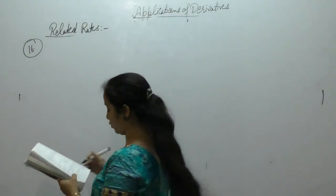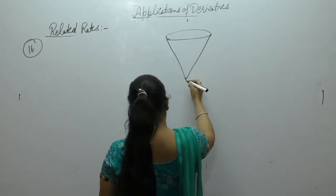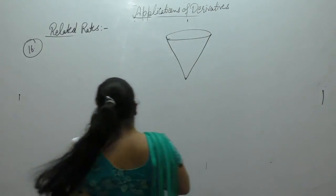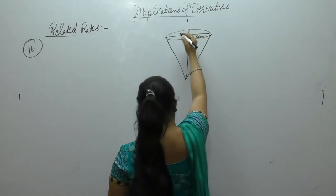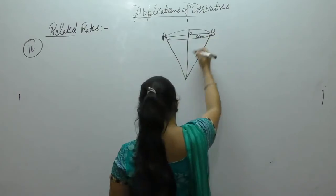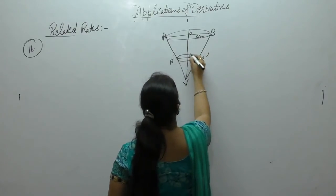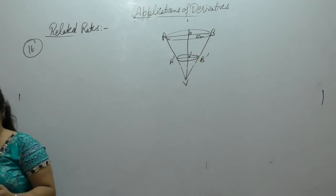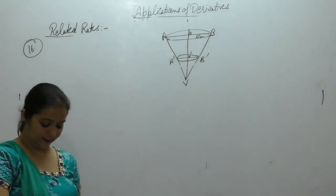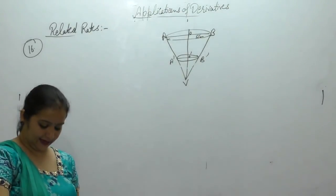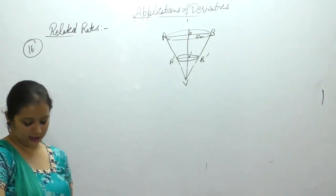An inverted cone has a depth of 10 cm and base radius of 5 cm. Water is poured into it at a rate of 3/2 cubic centimeters per minute. Find the rate at which the level of water in the cone is rising when the depth is 4 cm.